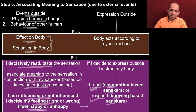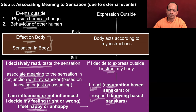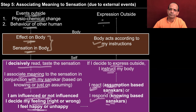Based on this, you instruct the body. You decide to express it outside, instruct your body, the body acts according to the instructions, and there is some expression outside. This is just one example — the example of a behavior of another human being.